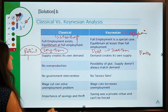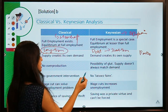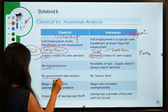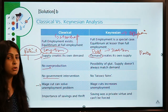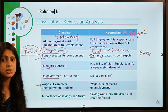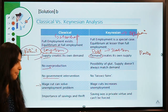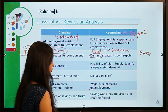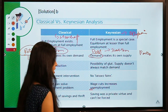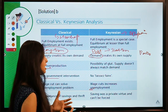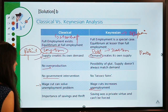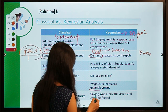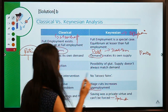Classical economics holds that supply creates its own demand, focuses on supply, and recommends no government intervention and wage cuts so companies can save and put money to better use. Keynesian economists say there is no benefit in wage cuts because it increases unemployment — if there is no investment and wages are cut, employees make no demand, and stagnated demand increases unemployment further. Classical economics stresses savings whereas Keynesian focuses on spending.